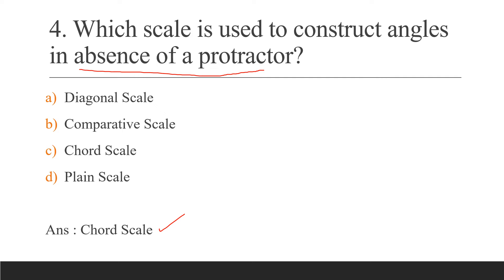The diagonal scale has 3 units of dimensions: centimeters, millimeters, and decimeters. The plane scale has 2 units: millimeters and centimeters. The comparative scale uses a fraction of a part in decimal form. The chord scale is used to measure and construct angles in place of a protractor.